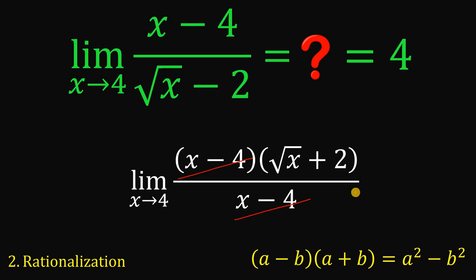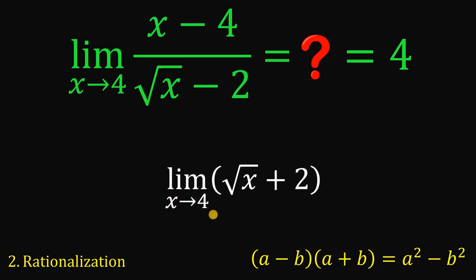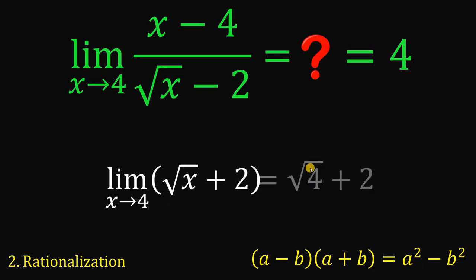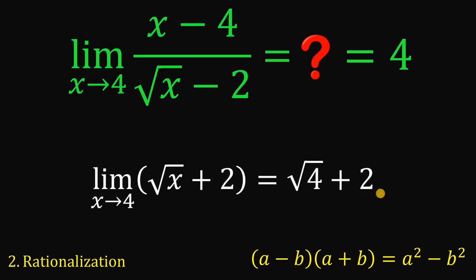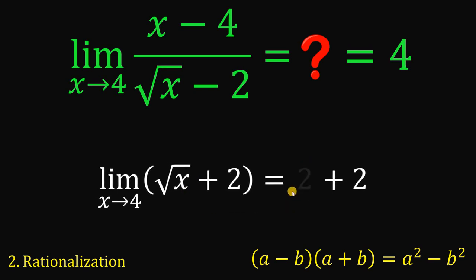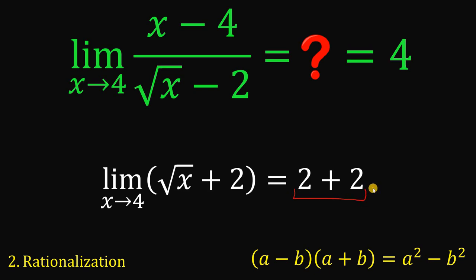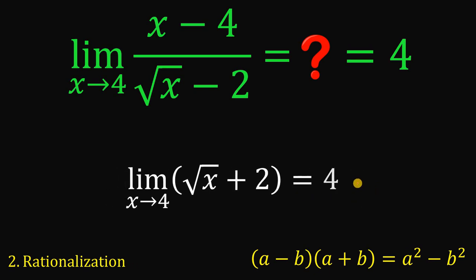After cancellation, we have the limit of square root of x plus 2 as x approaches 4. Since there's no longer a zero denominator, we can plug in x equals 4 directly: square root of 4 plus 2 equals 2 plus 2, which equals 4. So using rationalization, we get the same answer: 4.